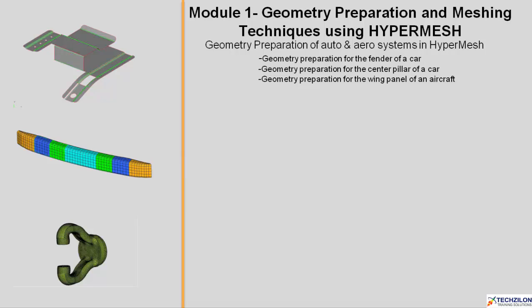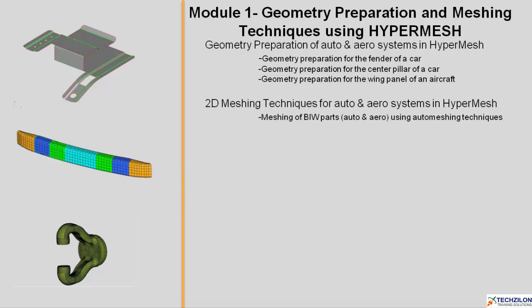We will then move on to 2D meshing techniques for auto and aero systems using HyperMesh. This will consist of meshing of BIW parts for both auto and aero using auto meshing techniques, and meshing auto and aero components for crash and durability analysis.